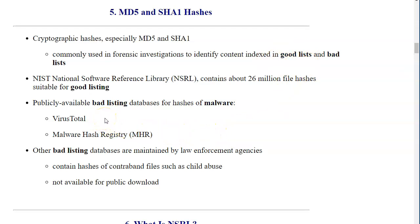There are also publicly available bad listing databases for hashes of malware. VirusTotal and the Malware Hash Registry are examples you can Google and attach to your cases. Other bad listing databases are maintained by law enforcement and contain hashes of contraband files such as child abuse images and videos. Instead of being discarded, these images are constantly added to bad listing databases and are available to law enforcement agencies only, not for public download.